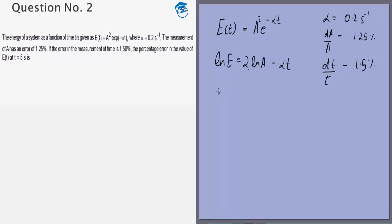Differentiating this will give us dE by E is equal to 2 dA by A minus alpha dt and there will be no d alpha times t because alpha is a constant.